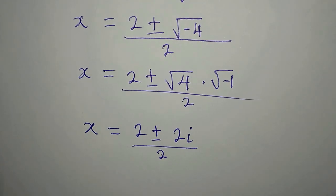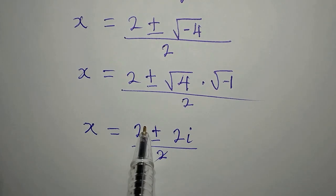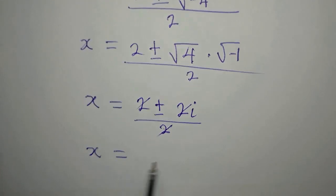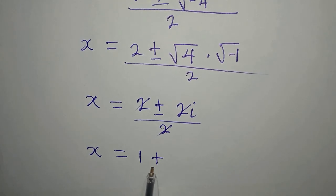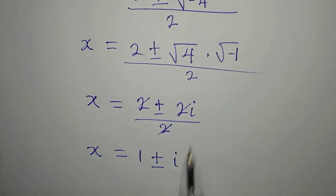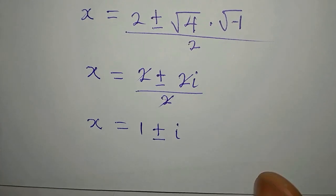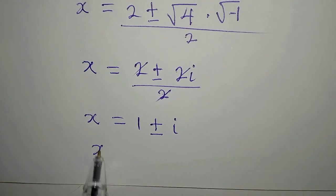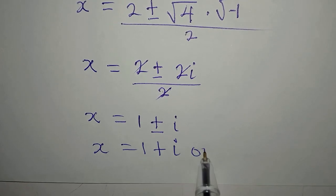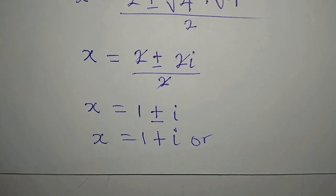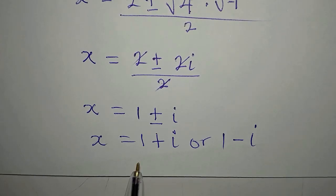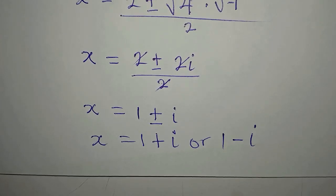The 2 cancels with the denominator, so we have x equal to 1 plus or minus i, because 1i is the same as i. This means x equals 1 plus i, or x equals 1 minus i. We now have two values of x.